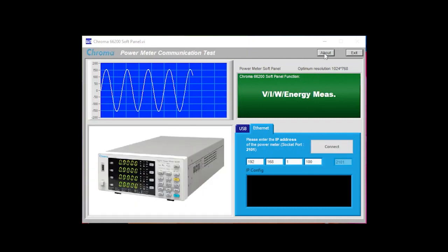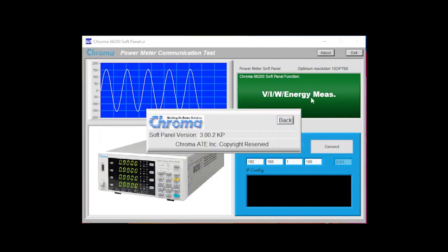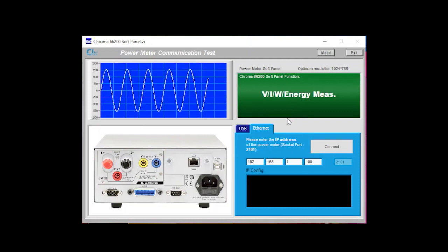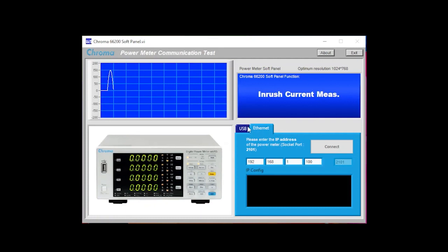In the main screen of the soft panel, you can see we have an About button, which will tell you the soft panel version you are currently running. We can also see an Exit button, which if pressed will exit the soft panel.